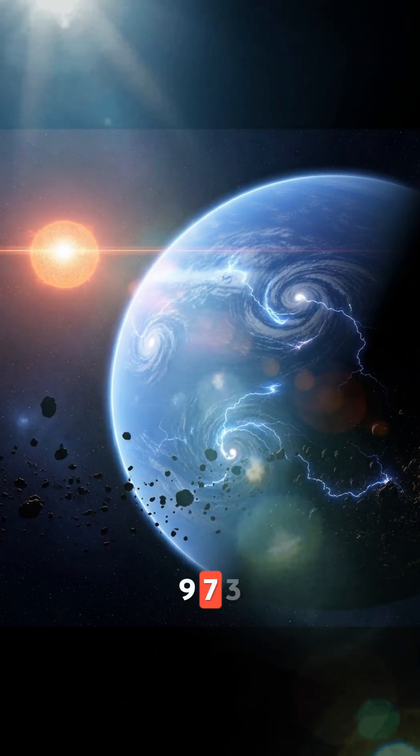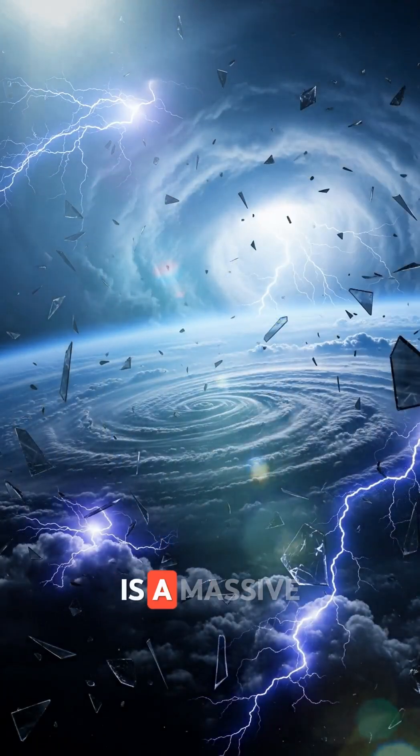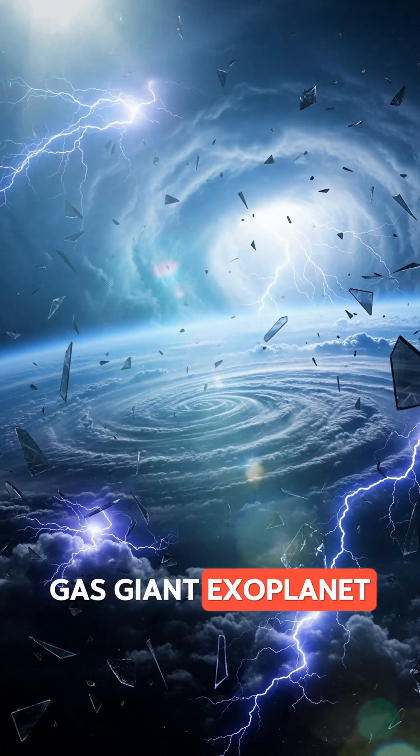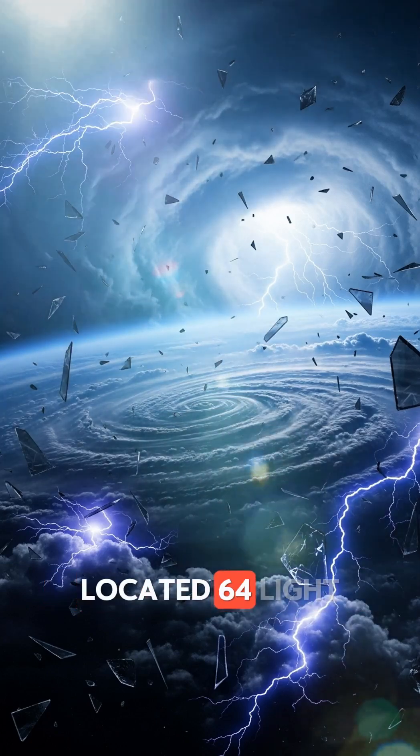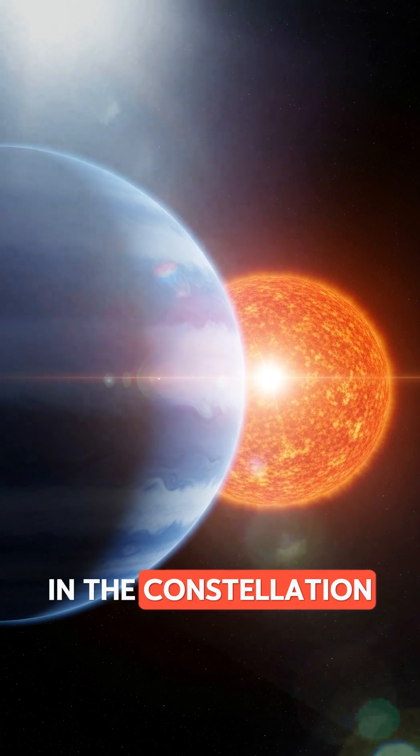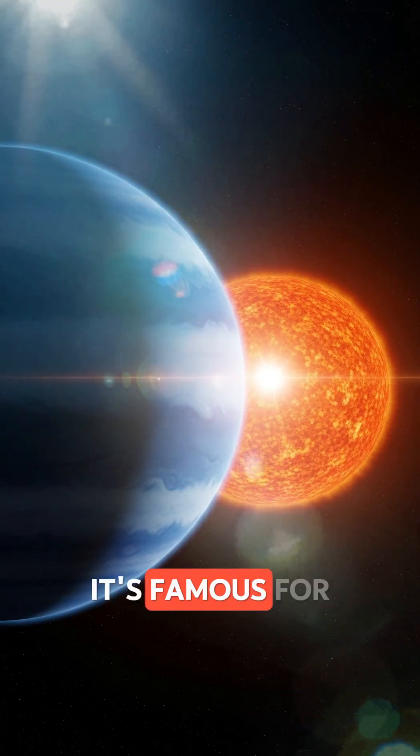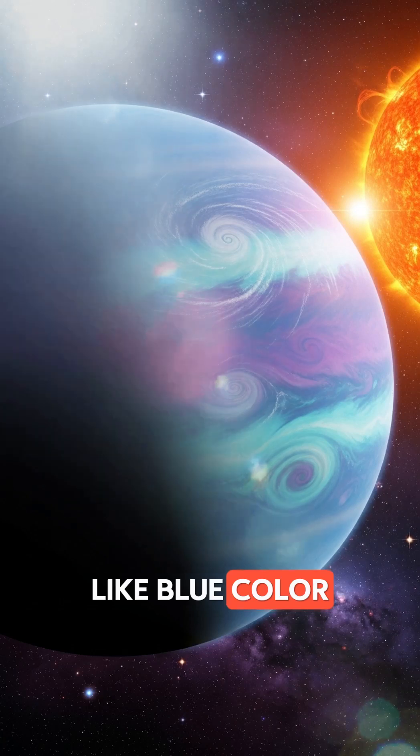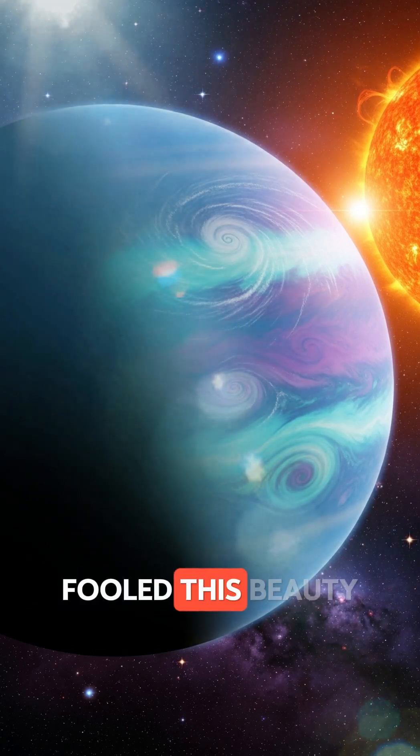HD 189733b is a massive gas giant exoplanet located 64 light years away in the constellation Vulpicula. It's famous for its deep, earth-like blue color. But don't be fooled. This beauty hides a deadly reality.